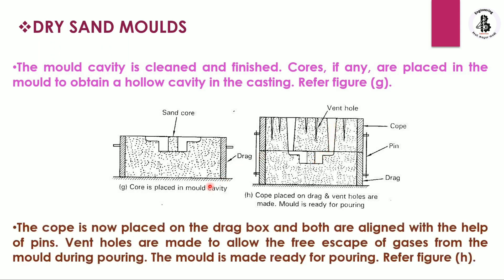The cope is placed onto the drag box and both are aligned with the help of pins. Vent holes are made to allow the free escaping of gases from the mold during pouring. The mold is now ready for pouring.